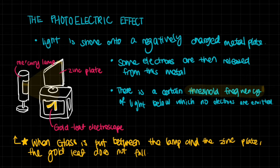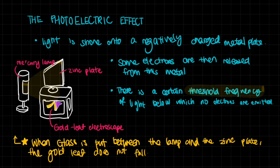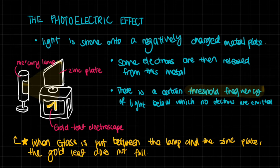What happens first is: light is shone onto a negatively charged metal plate — a zinc plate mounted on top of a gold leaf electroscope. The gold leaf has already diverged, meaning the plate is negatively charged. Some electrons are then released when light from the mercury lamp is shone onto it. As electrons are released, the magnitude of the charge goes down and hence the gold leaf slowly goes back.